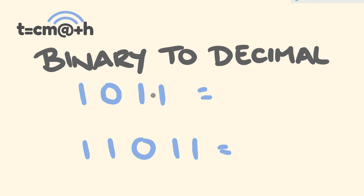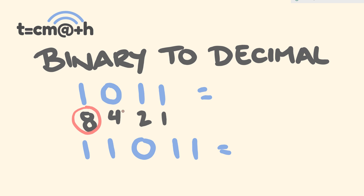Start underneath the rightmost number with a 1 and start doubling: 1, 2, 4, 8. The numbers we're going to be adding together are 8 plus 2, which is 10, plus 1 — the answer is 11.